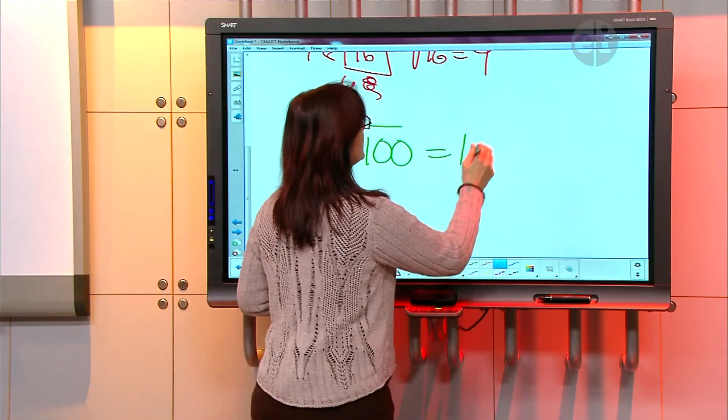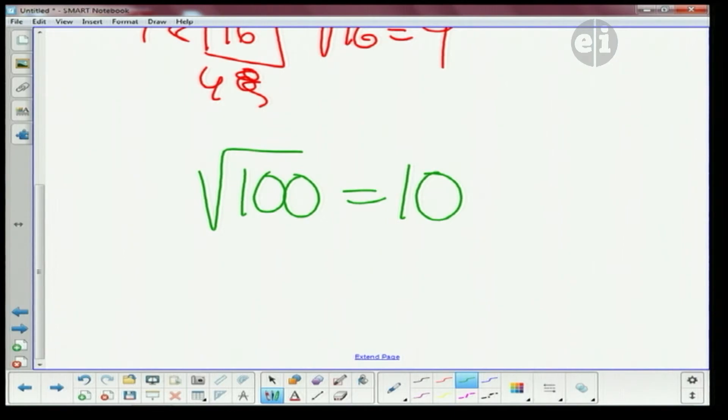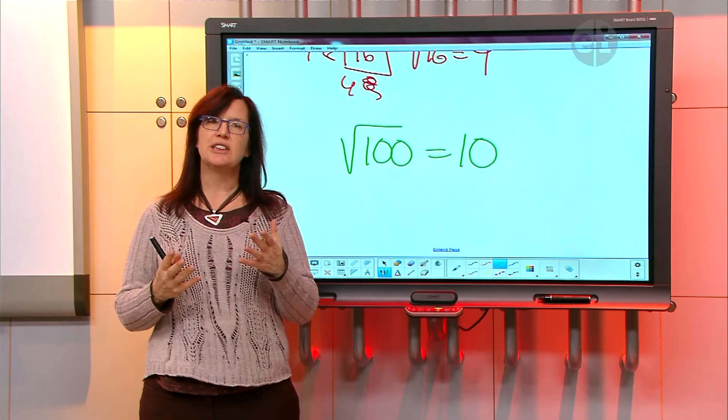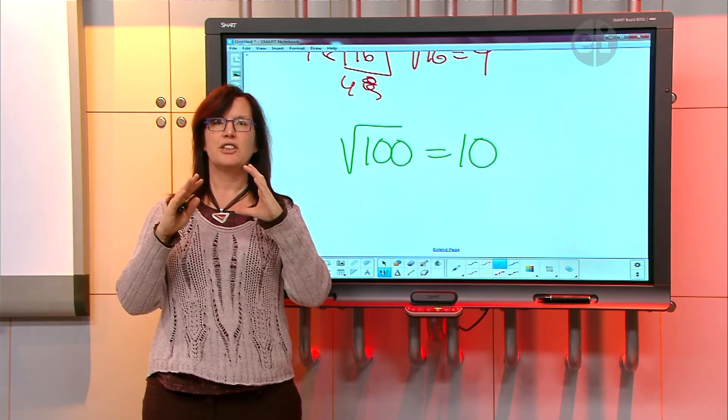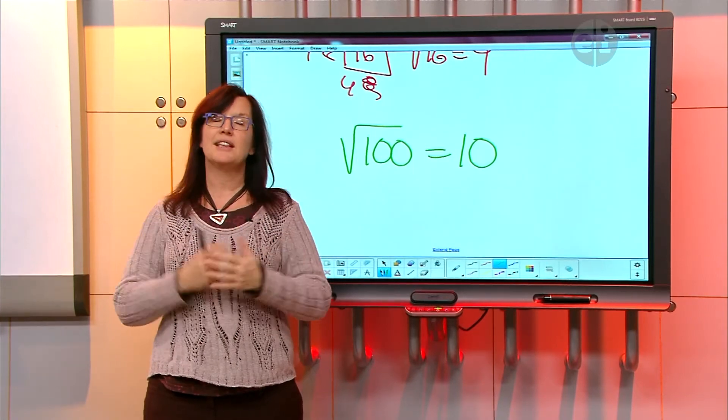So the square root of 100 is equal to 10. That's square roots—you're just thinking about a square, the area of the square, and what the dimensions of one of the sides would have to be.